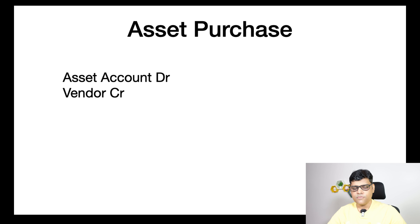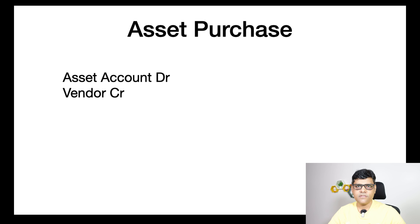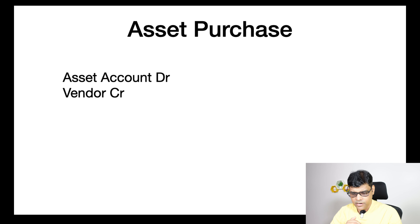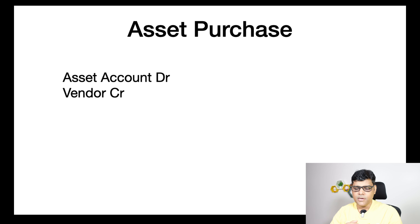So the first accounting entry I will take here is asset purchase — you can say asset purchase, asset acquisition. In SAP we say asset acquisition. From an accounting point of view, if you are going to purchase the asset from any vendor, then the asset account is going to debit and vendor is going to credit.